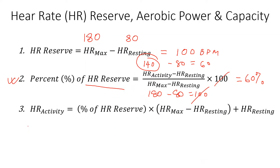How to calculate the target heart rate. Let's assume that you are working as an ergonomist and you don't want your workout to go over 30% of their max. So you want to figure out what would be their heart rate at a rate of 30% of their max reserve. This is the equation to calculate that.